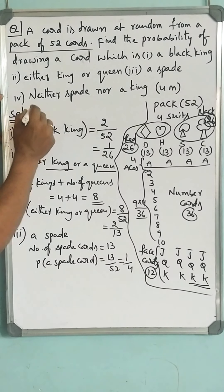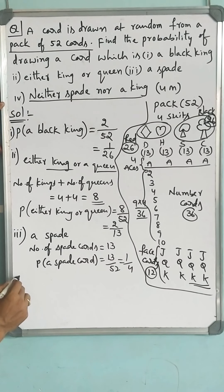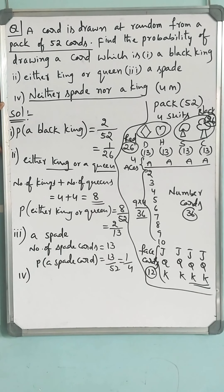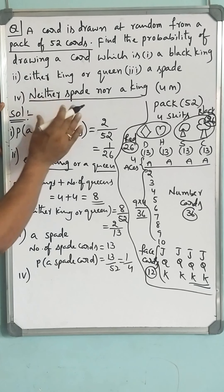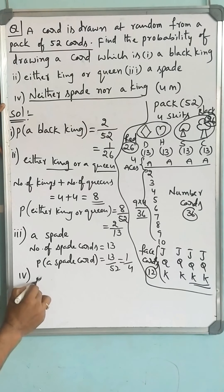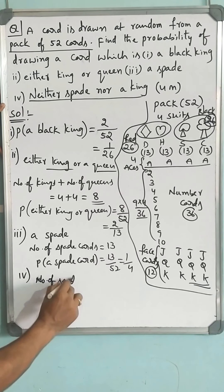Let us go for the last one, which is an important one. We need to find the probability of neither a spade nor a king — that means cards which are not a spade and not a king. First, let us find the cards which are spades or kings, and remove them. Number of spades = 13, plus number of remaining kings (since one king is already covered in the spade suit) = 3 more kings. Totally, 13 + 3 = 16 cards fall under spades or kings.